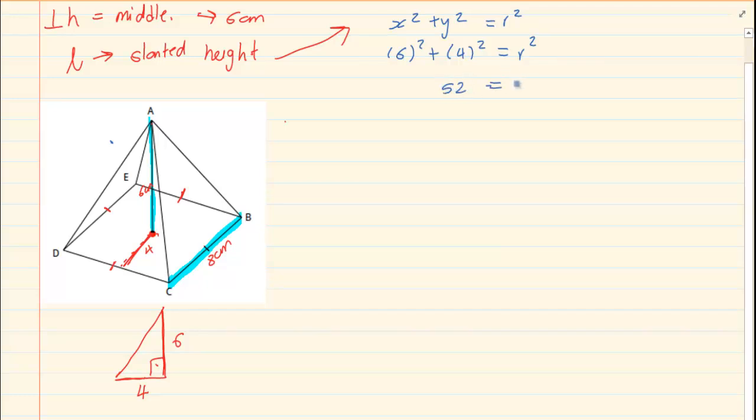So we have r squared is equal to 52 giving us r as the root of 52. So the slanted height in this equation is going to equal to the root of 52.